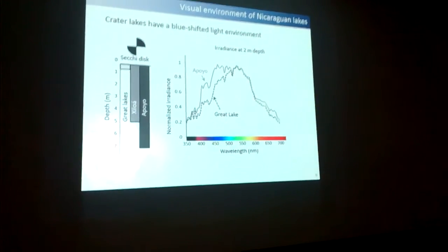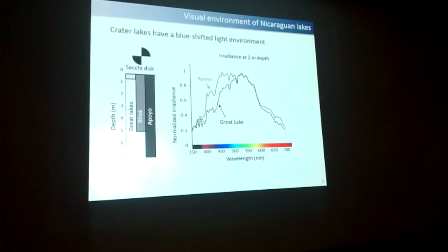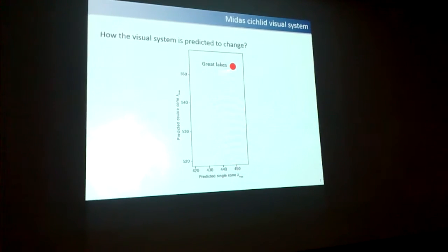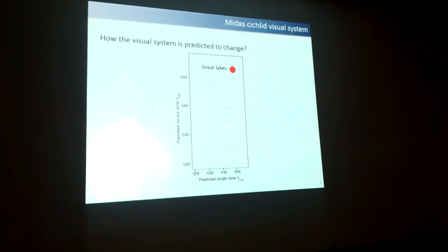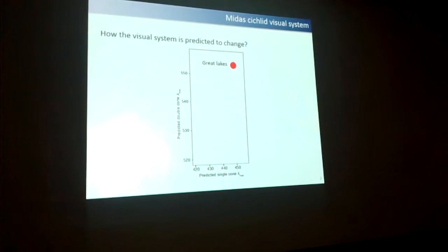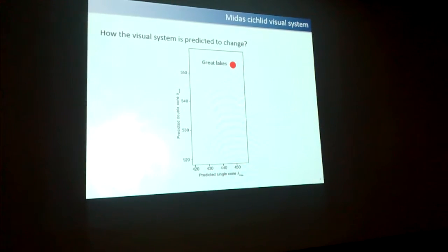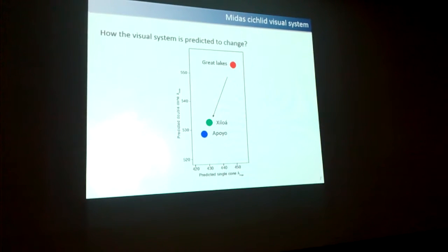If I predict that there would be a change, it would look like this. In the great lake, the double cones — which are for the red and green sensitive pigments — would be shifted to long wavelengths. When the cichlids colonize the crater lakes, they would shift to shorter wavelengths in both single cones and double cones. So these are my predictions.